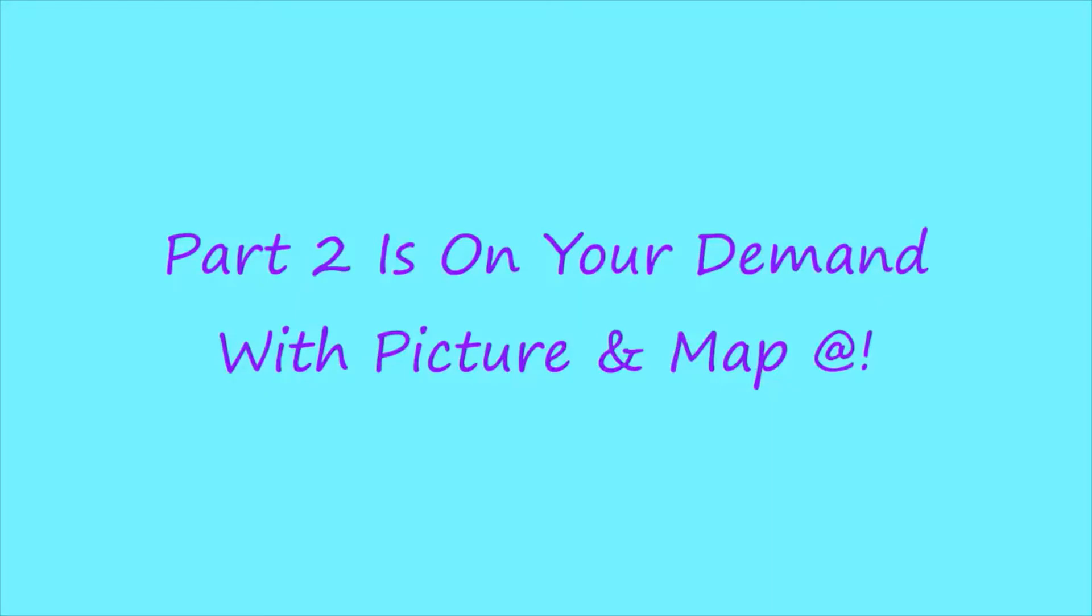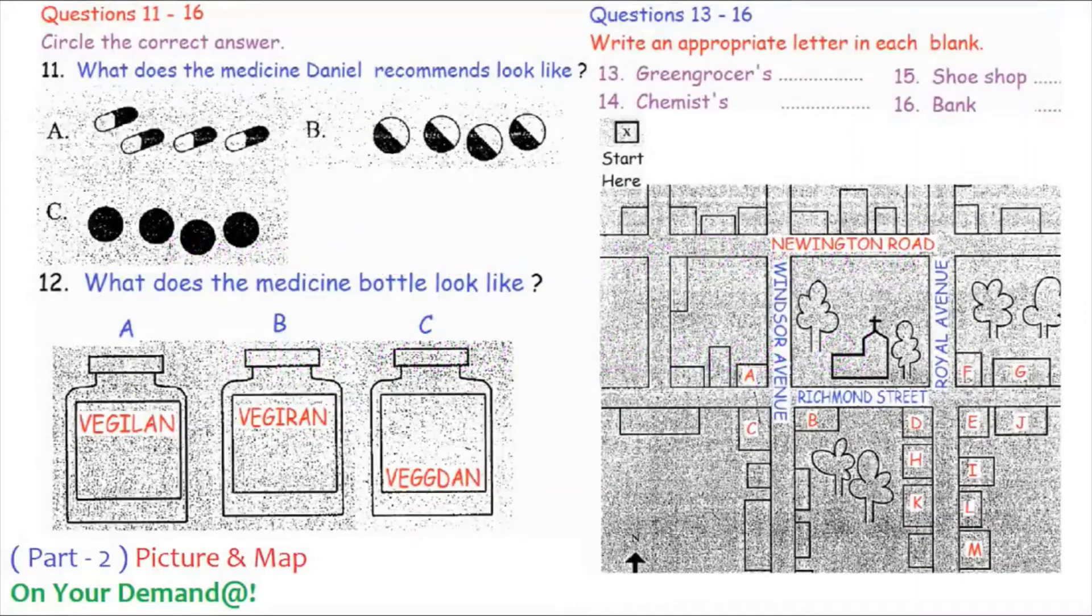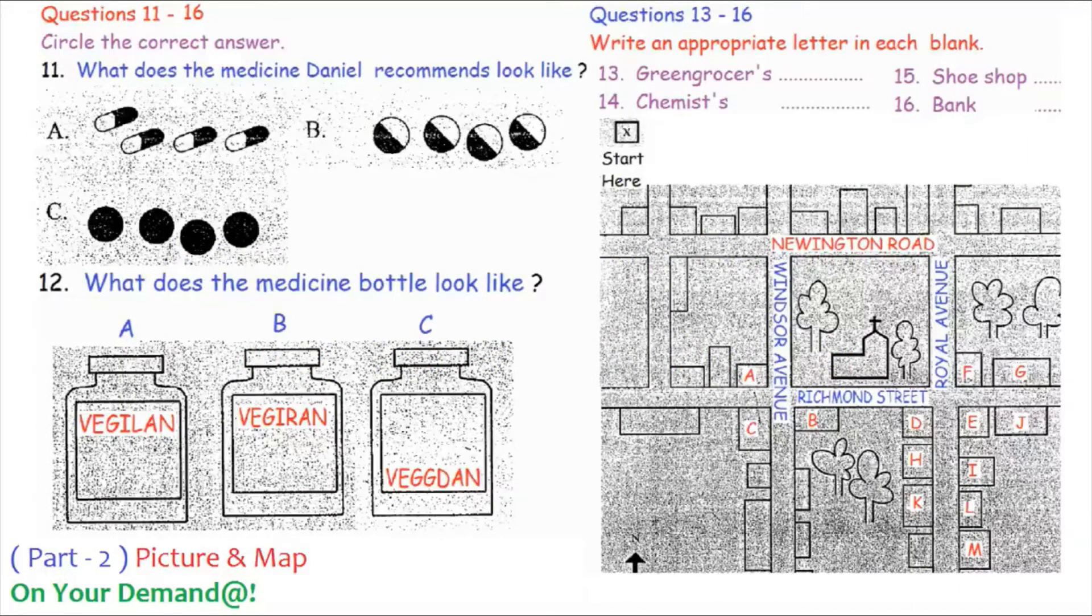Now turn to part two. Part two. Listen to the conversation between Daniel, a Spanish student, and Kira from Greece. Kira is asking about medicine for a cold, and then answer the following questions. First, you have some time to read the questions. Now, listen to the conversation.